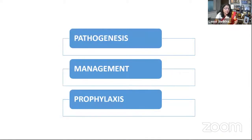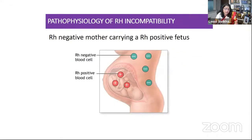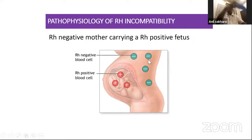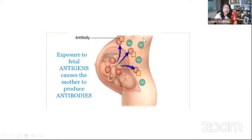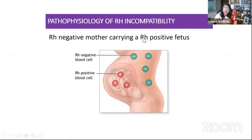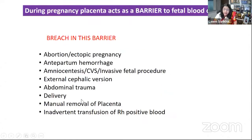My presentation has three main categories: pathogenesis, management, and prophylaxis. In very simple words, what happens if a mother is RH negative and the baby is RH positive? The mother has RH negative blood cells and the fetus has RH positive cells. The placenta is acting as a barrier — these positive cells are not coming into contact with the maternal cells.